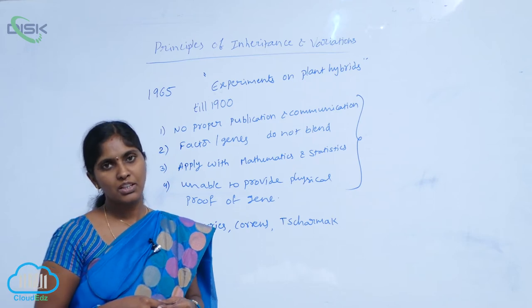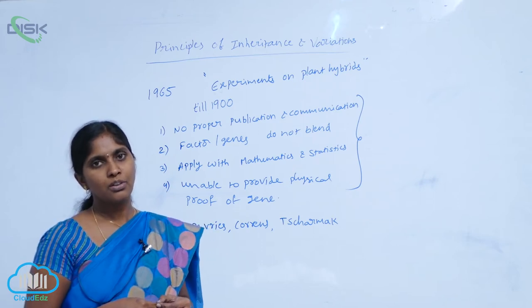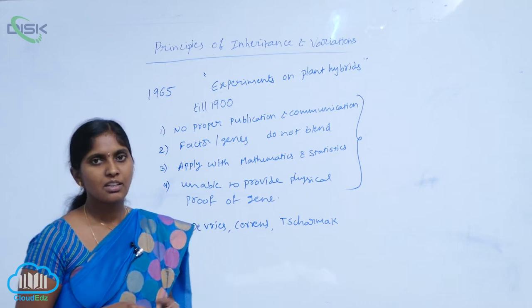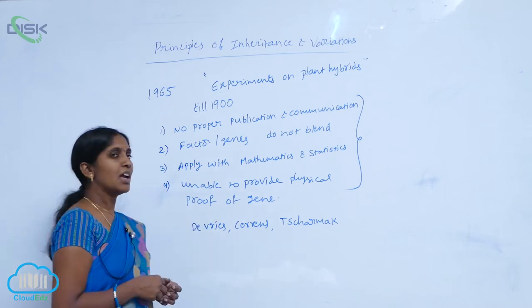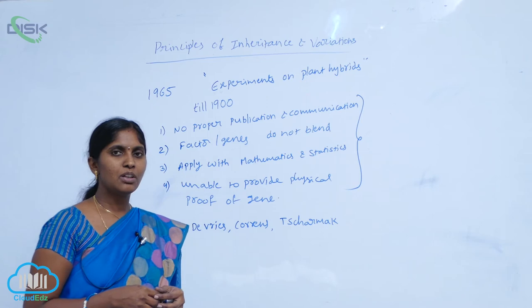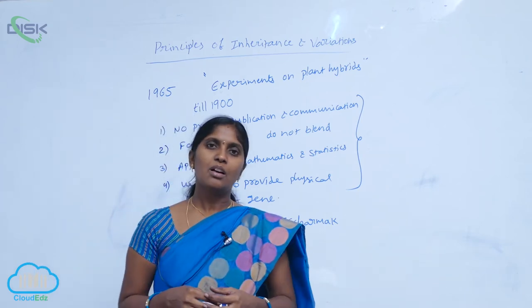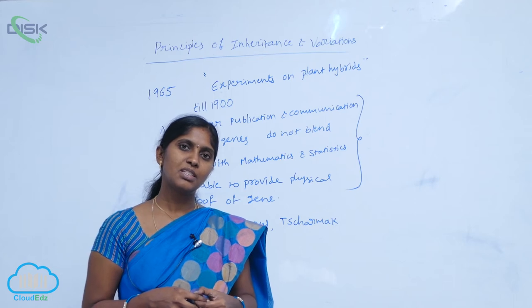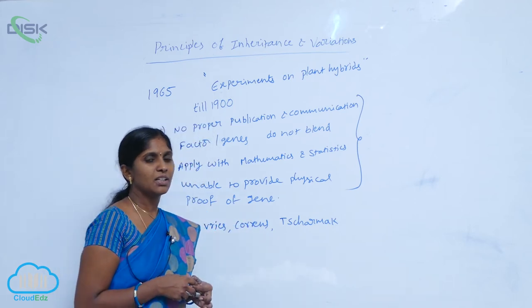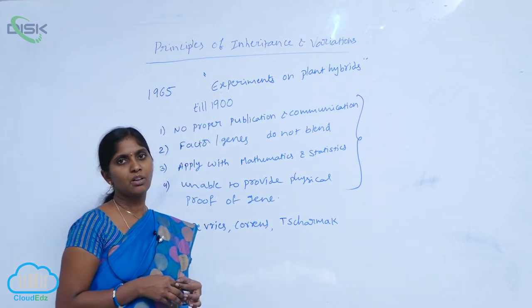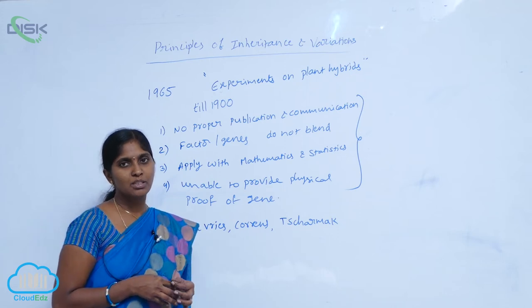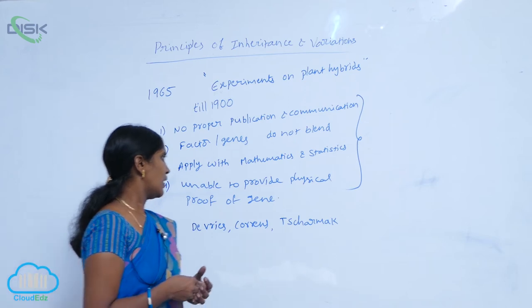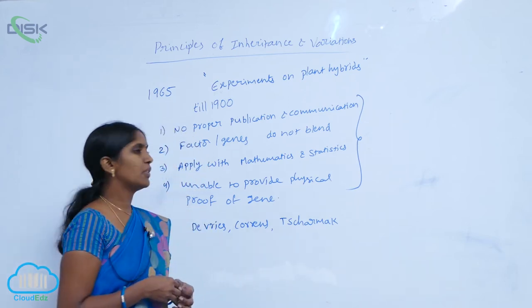Specifically, the law of segregation and the law of dominance were both not accepted by contemporary scientists. Additionally, Mendel's application of mathematics and statistics in the biological field was also not accepted. Another drawback was his inability to provide physical proof of the gene.